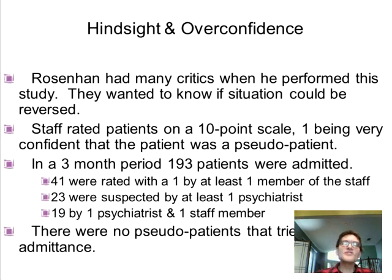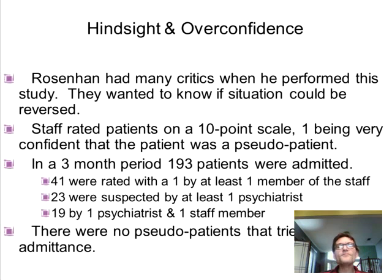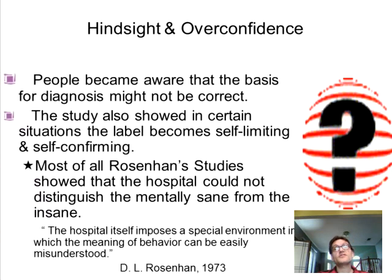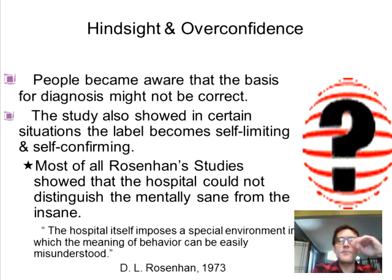So they tested the reverse. They went back to hospitals and told staff to rate on a 10-point scale how confident they were that someone was a pseudo-patient. Over three months, 193 patients were admitted, and 41 were rated as likely fake patients — 23 by a psychiatrist, and 19 rated as fake by both a psychiatrist and a staff member. Of course, there were absolutely zero actual pseudo-patients. This powerfully showed that diagnostic labels become self-confirming, and hospitals couldn't reliably distinguish mentally healthy from mentally ill individuals.